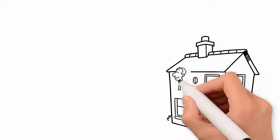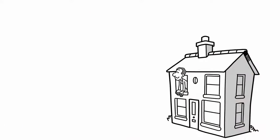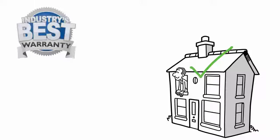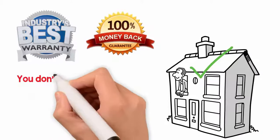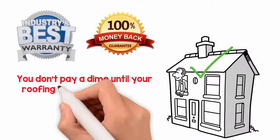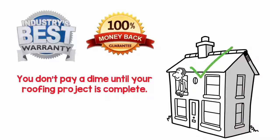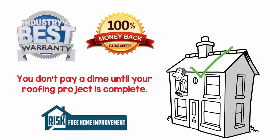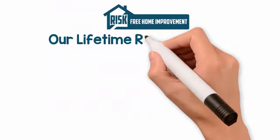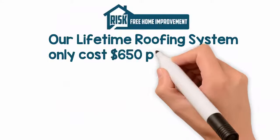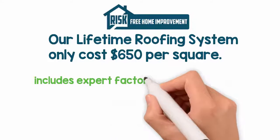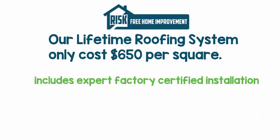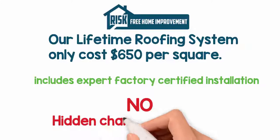If, however, you are looking for a superior performing lifetime architectural roof with the best warranty in the industry and backed by a 100% money back guarantee, all while not paying a dime until your roofing project is completed, then we are the only company for you. And the best part is that our lifetime roofing system only costs $650 per square and that includes expert factory certified installation. That's it. No hidden charges or add-ons.